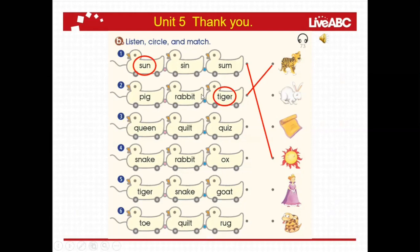Number two, repeat: tiger. Tiger. What does it mean? Tiger — tigre. Number three, listen: queen. Queen. Look for the picture. Busca el dibujito también. Okay. Number three: queen. Repeat: queen. Queen. What does it mean? Queen — reina. Reina. Okay.